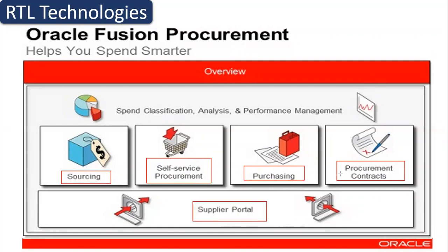When we combine all five modules, we call it Procurement. The Purchasing module is lengthy and takes time to learn, but Self-Service Procurement, Sourcing, Supplier Portal, and Procurement Contracts are not as complex. Once you learn Purchasing, the remaining modules are mostly additional functionality that integrates with the core purchasing module.